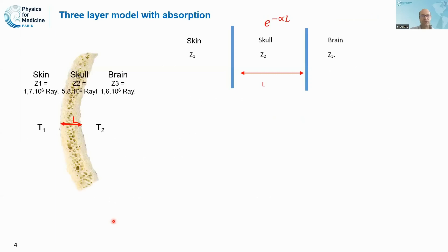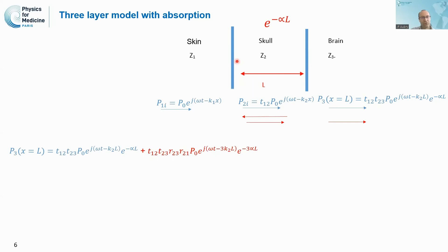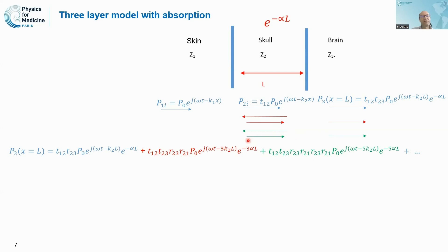What we did is model the skull as a three-layer model — skin, skull, and brain — and we considered the impedance mismatch but also the absorption inside the skull, and estimated the transmission of pressure. There is a first term based on the transmission of the wave through the skull, and then we take into account the reflections inside the skull, which suffer from each interface and from the absorption of ultrasound crossing the skull three times, and then the third reflection and third transmission through the skull.